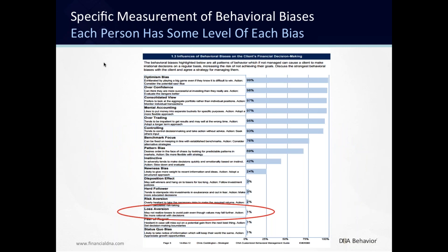Looking at Chris Coddington's 16 behavioral biases, loss aversion is circled. With Chris Coddington, loss aversion is not something you need to worry about. But when we get to Carol Benjamin, she would have a higher propensity for loss aversion — that loss feeling being two times greater than the gain. These biases give you a great way to manage not only individuals but couples and families in their investment decisions.